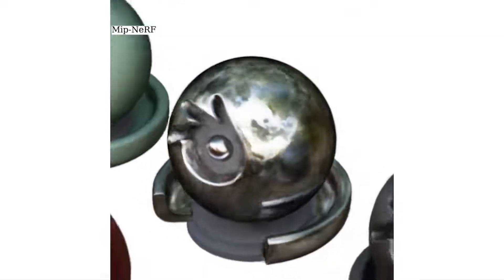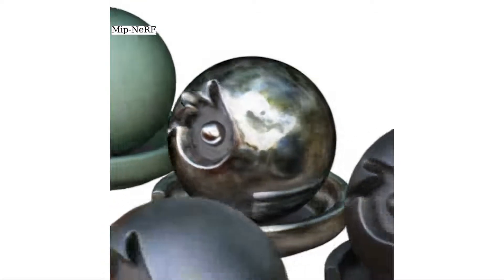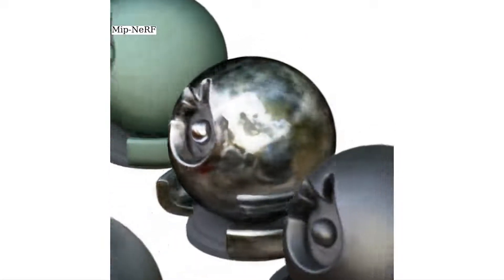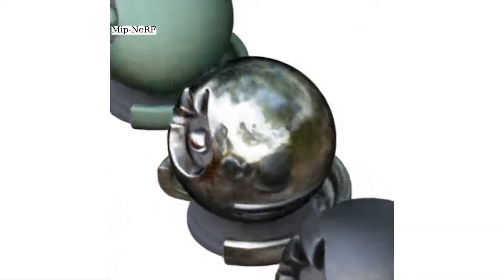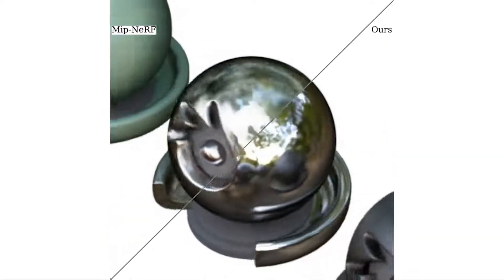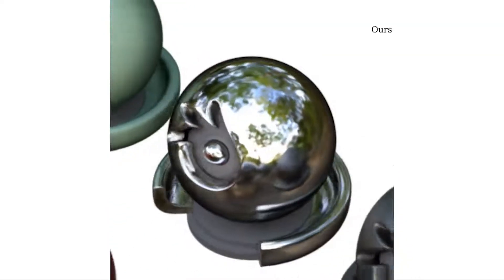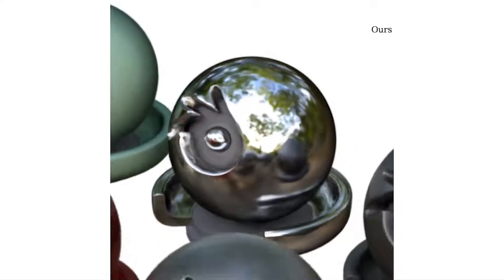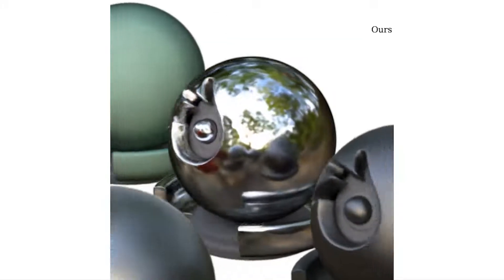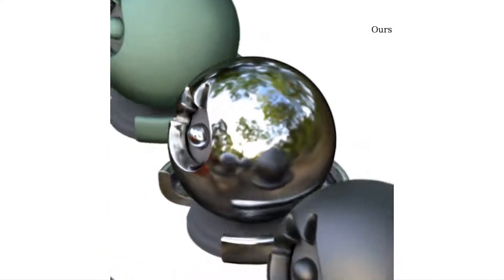For this chrome ball, MipNeRF poorly approximates reflections as semi-transparent clouds that appear and disappear between different views. Our model, which we call RefNeRF, fixes NeRF's failure to correctly represent view-dependent appearance and produces much more realistic and accurate renderings of specular reflections which are crucial for realistic view synthesis.